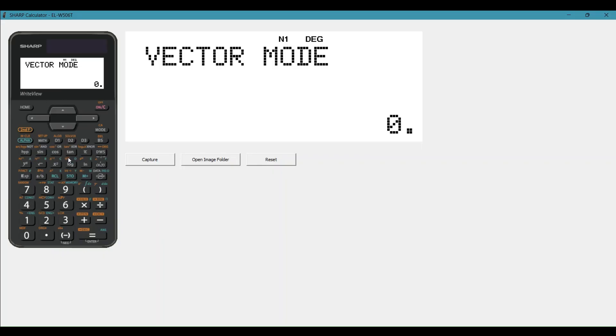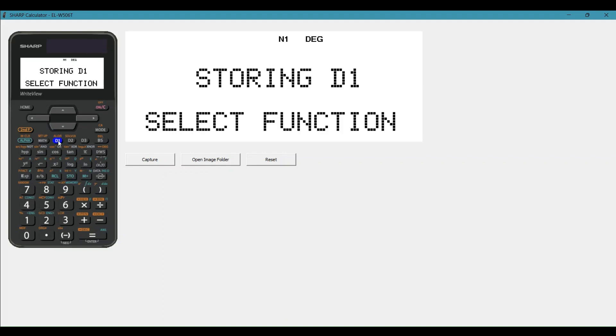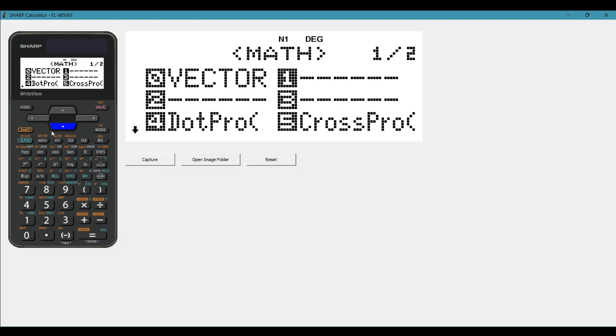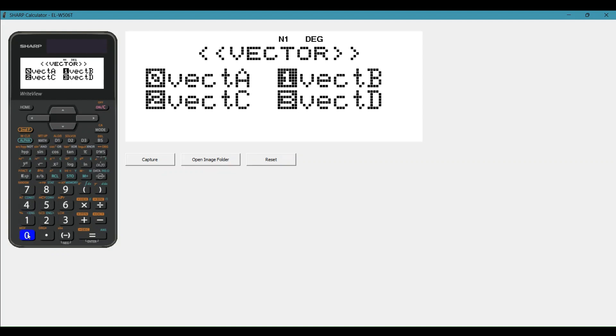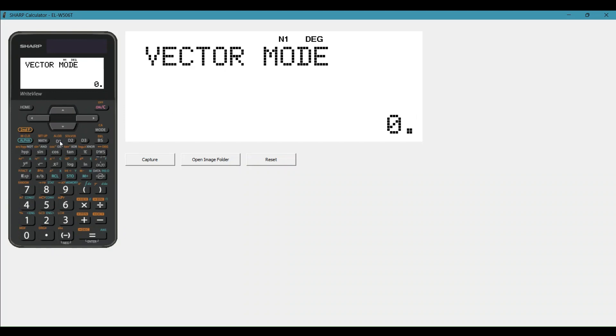So to save your vector name, we're just going to say store into d1, and we're going to say math, and zero for vector, and then we just choose vector A, which is zero. Now anytime you press d1, vector A automatically comes up.